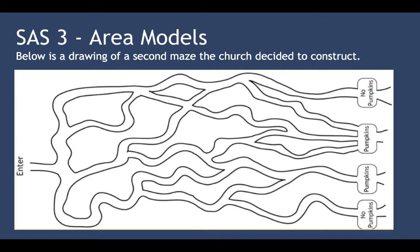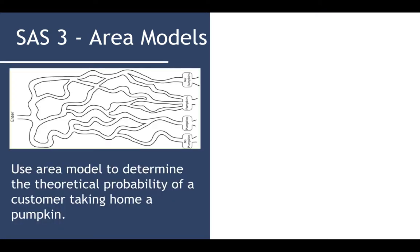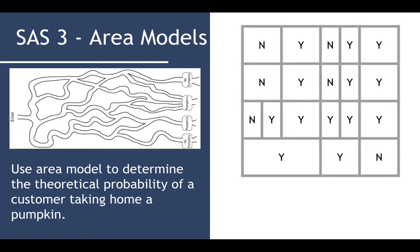Now look at the drawing of the second maze the church decided to construct. A little convoluted, isn't it? Use an area model to determine the theoretical probability of a customer taking home a pumpkin. There's four pathways coming off the entrance, and I've separated them into different pathways. If you take the upper pathway, it splits once. Notice you can't go backwards. Splits once. And it splits twice. Splits once here, and then it splits once here. And this one does not split again.